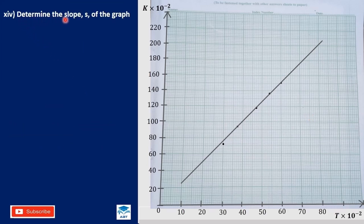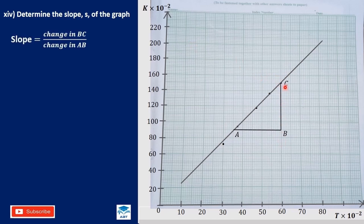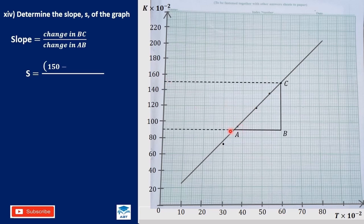We are going to determine the slope S of the graph. We draw a horizontal and a vertical line, naming the points A, B, and C. The slope is given by change in BC over change in AB. For change in BC, we have 150 minus 90 times 10 exponent negative 2.